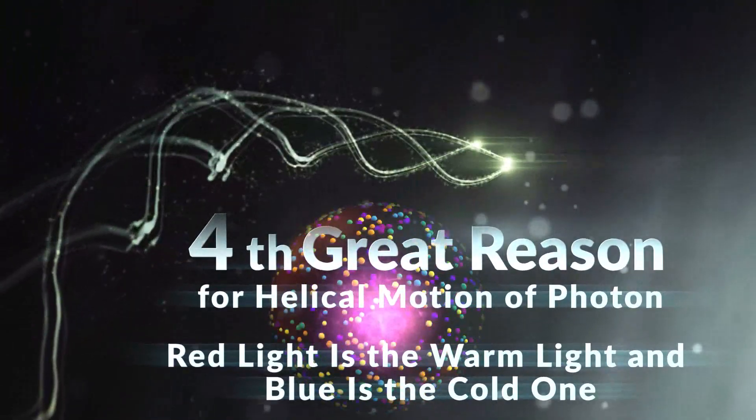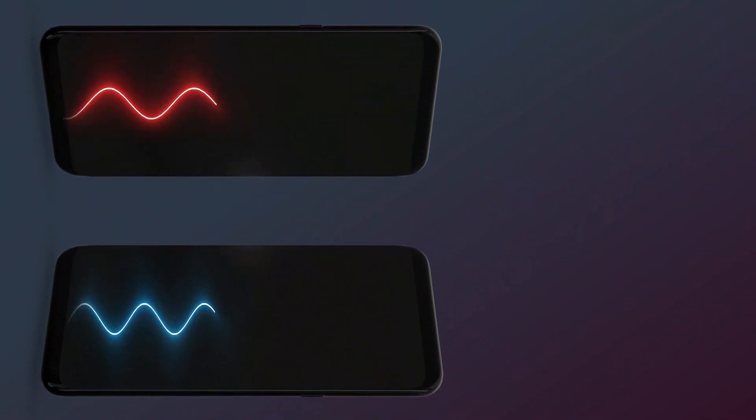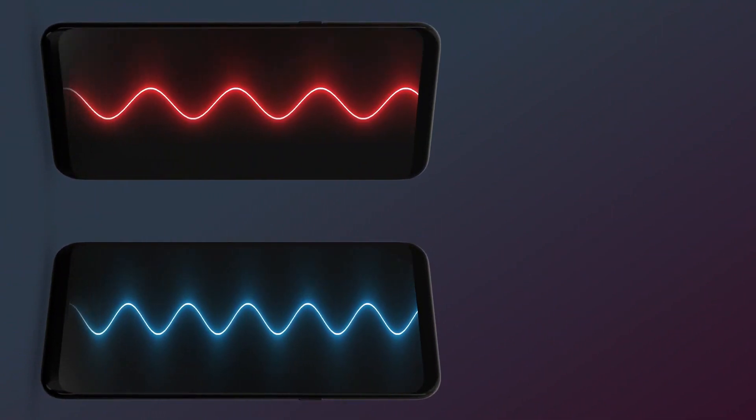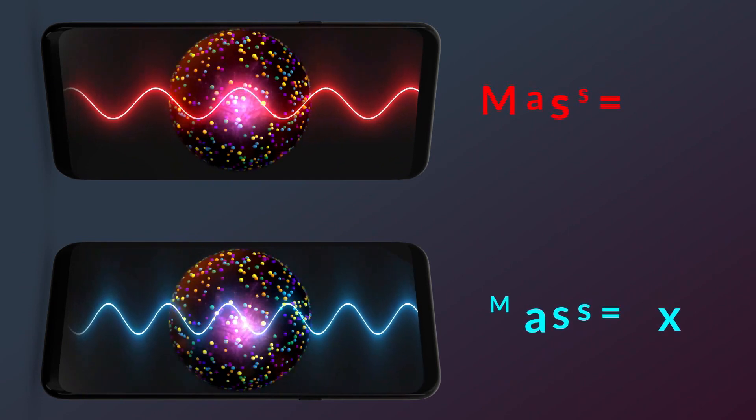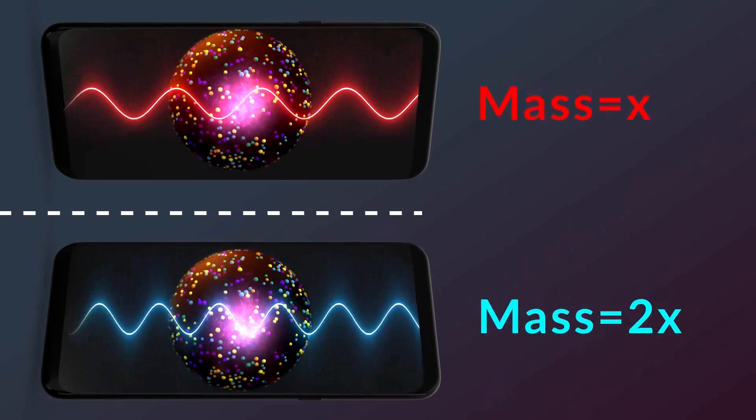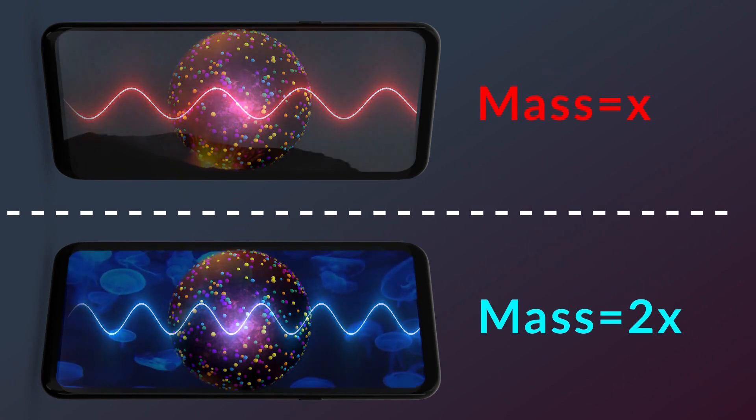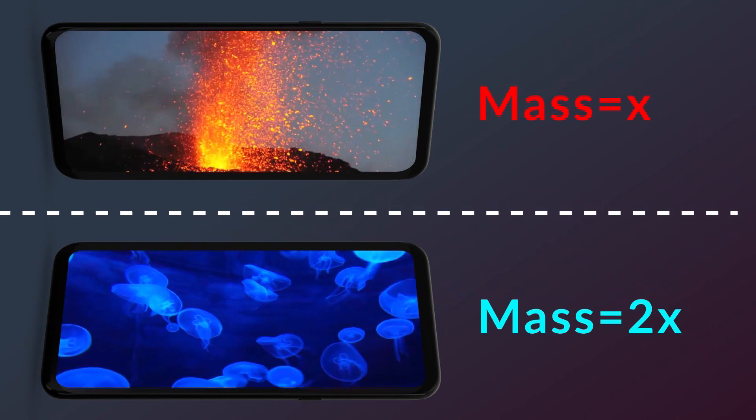4. Red light is the warm light and blue is the cold one. According to the wave-particle duality theory, the mass of a blue photon is assumed to be about twice the mass of a red photon. On the other hand, the energy of blue light is estimated to be higher than the energy of red light due to its higher frequency. Whereas, visually and sensually, the red light is heavier, stronger and warmer than the blue light.